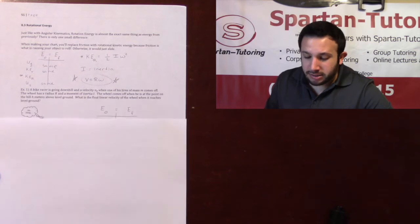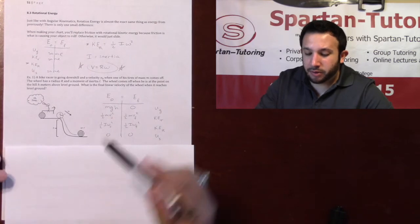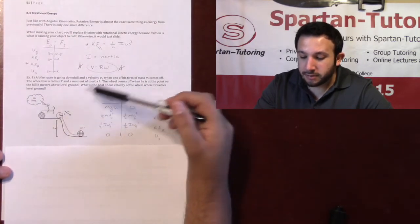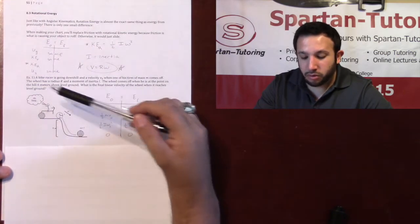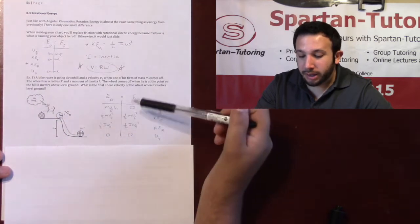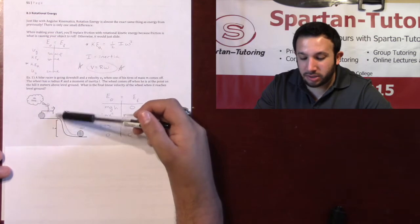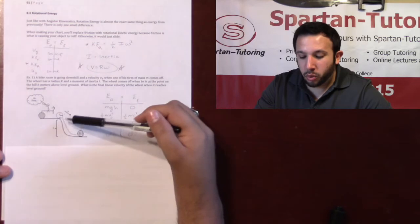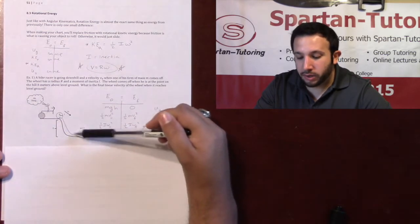So let's take a look at this example. Taking a look at this example, what I have is that a bike racer is going downhill with a velocity V0 when one of the tires of mass M comes off. The wheel has a radius R, a moment of inertia I. The wheel comes off when he is at a point some height H meters above level ground. What is the final linear velocity of the wheel when it reaches the ground? And we're going to assume that the wheel just rolls all the way down.